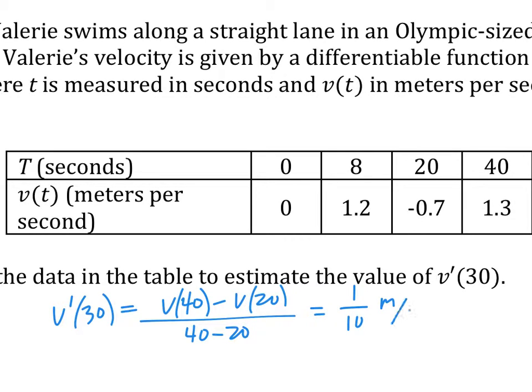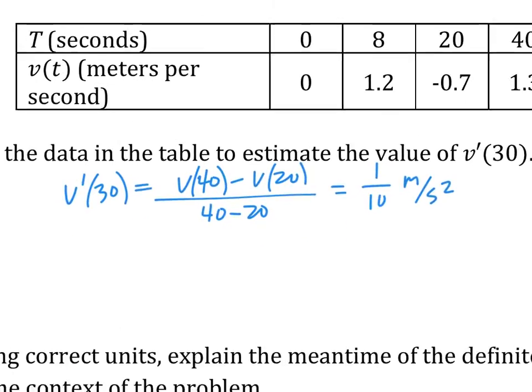Okay, v prime of 30 is just a rock, right? V prime means acceleration. So this is just v of 40 minus v of 20 over 40 minus 20. So the answer is 1 tenth. And this is meter per second squared. Okay, make sure it's squared because this is acceleration.